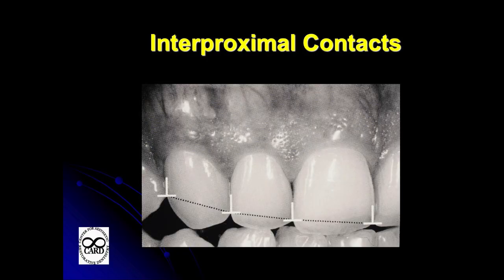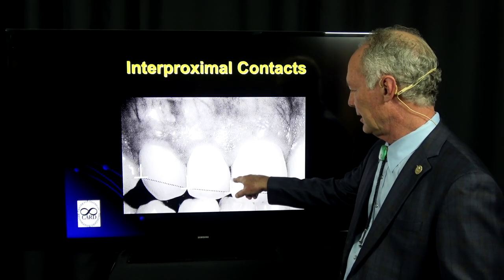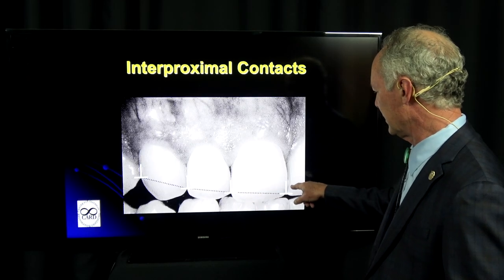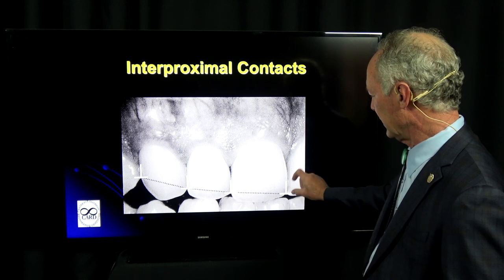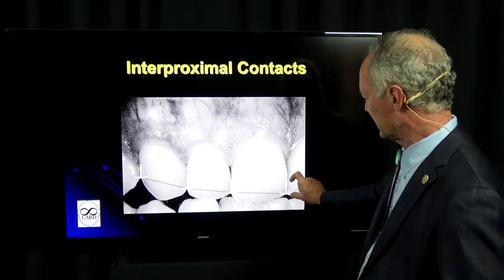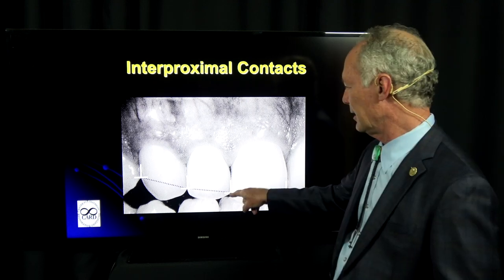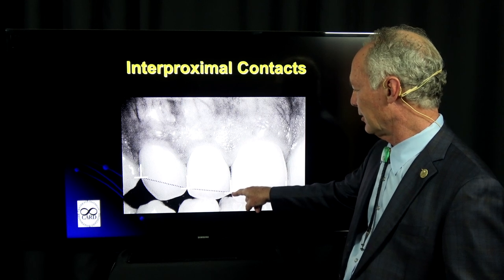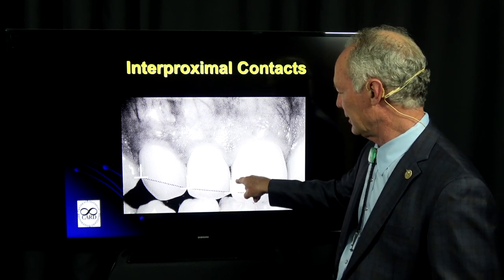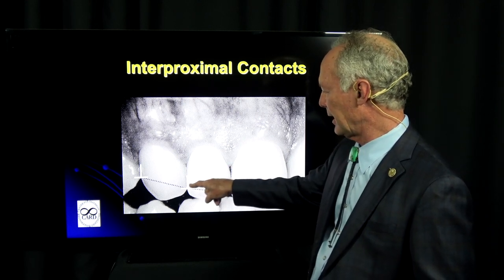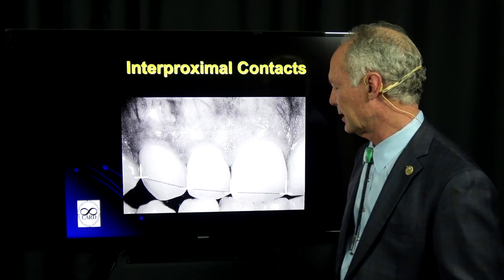The interproximal contacts are not in the center of the tooth. Between the central incisors, they're in the incisal one-fourth of the tooth. Then they slowly move apically between the central and the lateral, and the lateral and the cuspid.